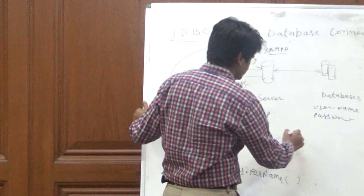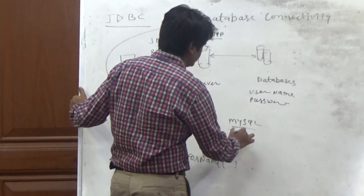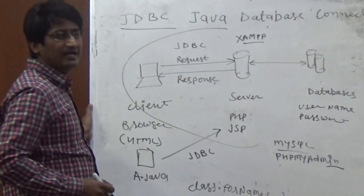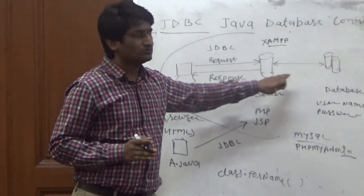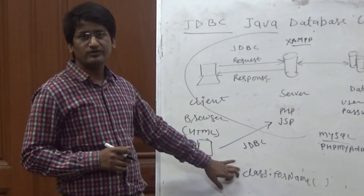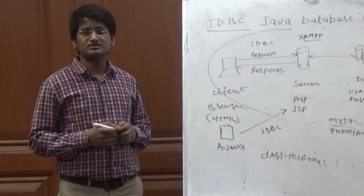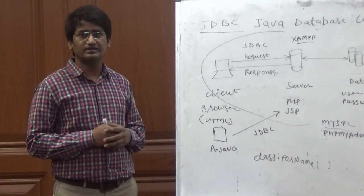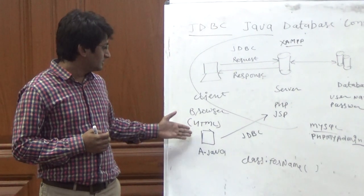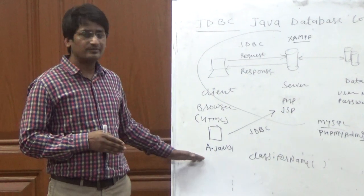XAMPP also gives us a MySQL panel with the help of phpMyAdmin. This phpMyAdmin acts as the database on the client-side server. Using Class.forName() we communicate with phpMyAdmin, and by creating a PreparedStatement in Java we can run SQL and communicate with the database. Since databases only understand SQL — just as browsers only understand HTML — we supply SQL to the database using the PreparedStatement.